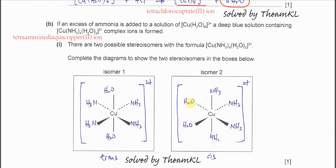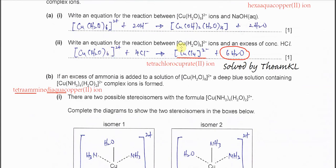Part B: if excess ammonia is added to a solution of the hexa aqua copper(II) ion, a deep blue solution forms containing the tetraamine diaqua copper(II) ion. 'Tetraamine' refers to the four ammonia ligands and 'diaqua' means two H₂O ligands. You need to know how to get the formulas and equations correct.